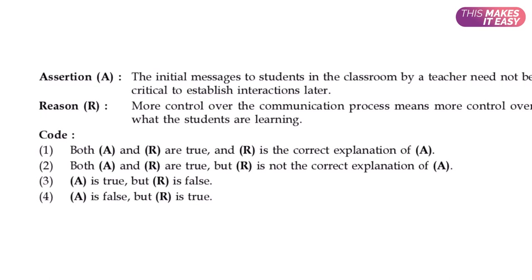Let's look at one more example. The assertion says the initial message to students in the classroom by a teacher need not be critical to establish interaction later — but it is critical, so the assertion is false. By reading the assertion itself we knock out the first two options immediately. Since the assertion is false, option four is the answer. If you apply this technique, the answer is a matter of few seconds. Enjoy this technique and best of luck!